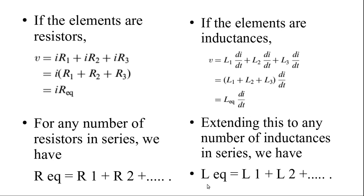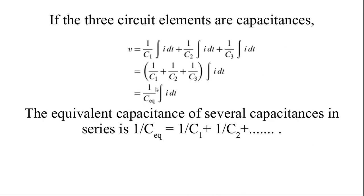For capacitors connected in series, the basic formula is V = q/C, and using i = dq/dt, the voltage across a capacitor is (1/C) × integral of i dt. So for three capacitors in series: 1/C_equivalent = 1/C1 + 1/C2 + 1/C3, or up to 1/Cn for n capacitors.